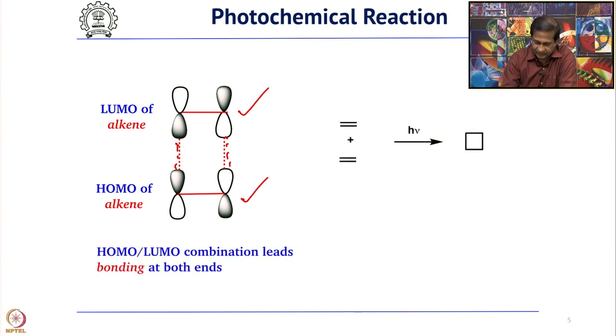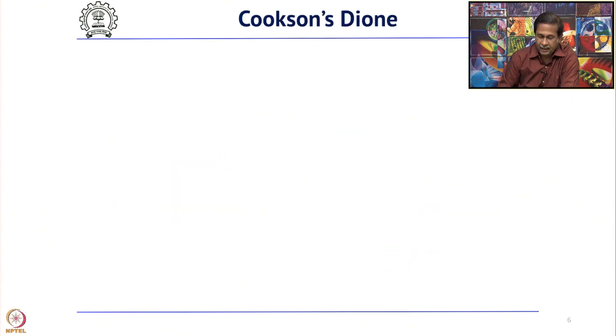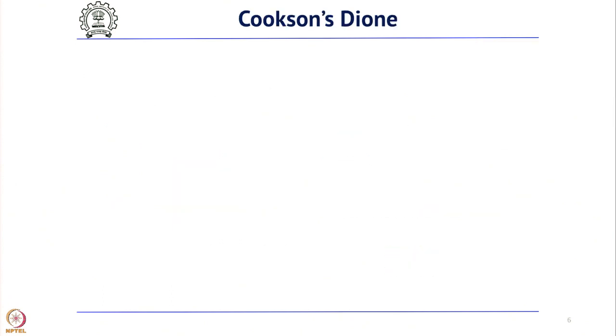The simplest example is two ethylene molecules giving simple cyclobutane. There are many complex reactions carried out using 2+2 cycloaddition. Before we go into the total synthesis of Cubane, I want to show you one very interesting example reported much earlier — the preparation of Cookson Dione.